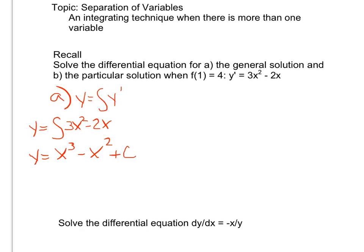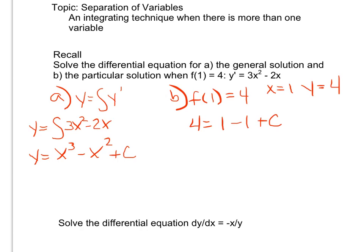For part b, if I were asked to find the particular solution and I know that f(1) equals 4, that's telling me if x is 1, y is 4. So I'll plug that into my general solution and solve for c. So 4 equals 1 cubed minus 1 plus c, meaning 4 equals c. My particular solution would then be y equals x cubed minus x squared plus 4, putting c back into my equation.